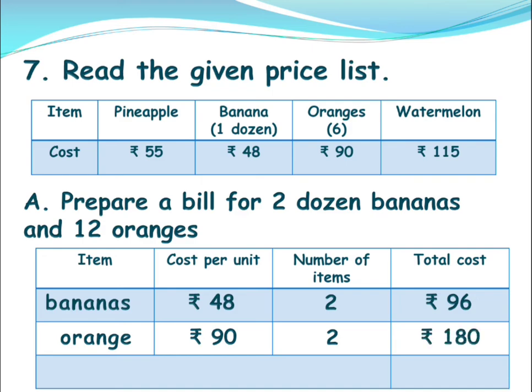So this is the bill you got for two dozen bananas and 12 oranges. The total amount you have to pay is 96 plus 180. You will get 276 rupees. So in this way, you have to make columns, include all the items, and then find the total amount.